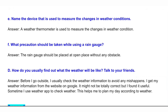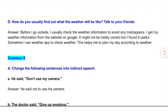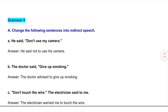D: How do you usually find out what the weather will be like? Answer: Before I go outside, I usually check the weather information to avoid any mishaps. I get my weather information from the website on Google. It might not be totally correct, but I find it useful. Sometimes I use a weather app to check weather, which helps me to plan my day according to the weather.